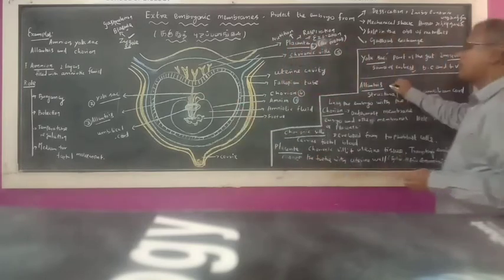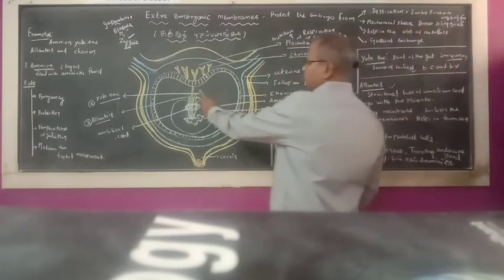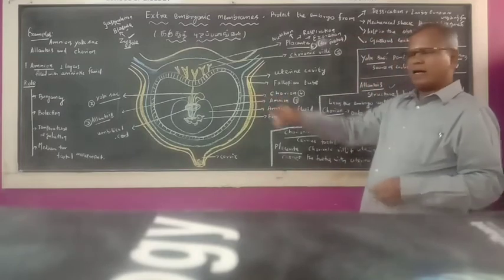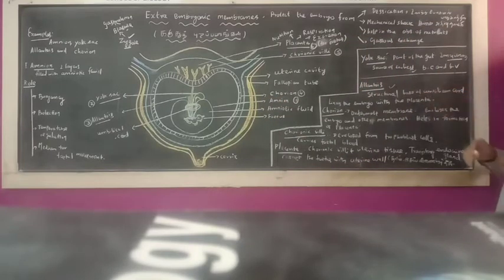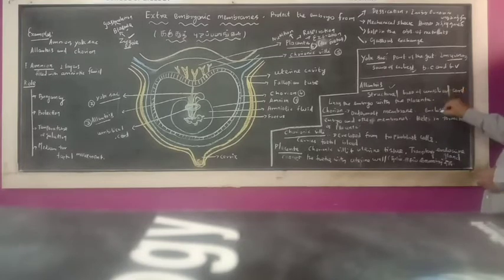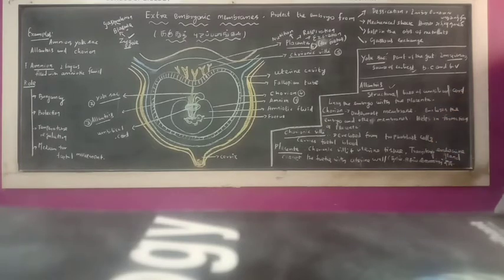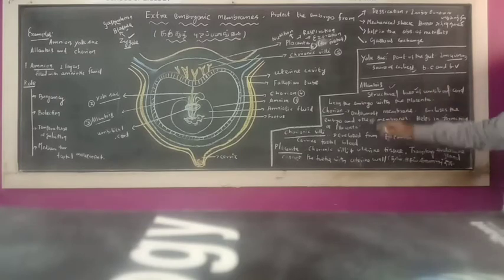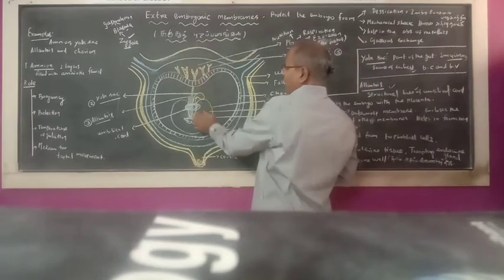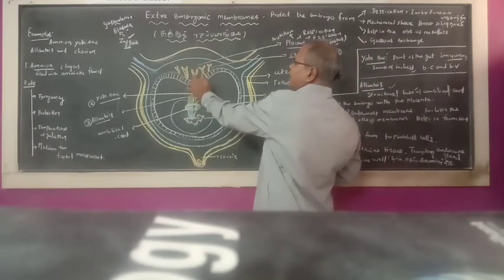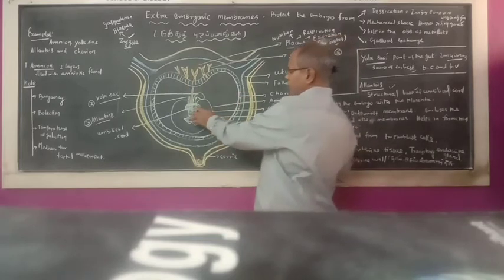Next one is the Allantois. The Allantois is the structural base for the Umbilical Cord. The Umbilical Cord links the embryo with the Placenta. This is the embryo and this is the Placenta.